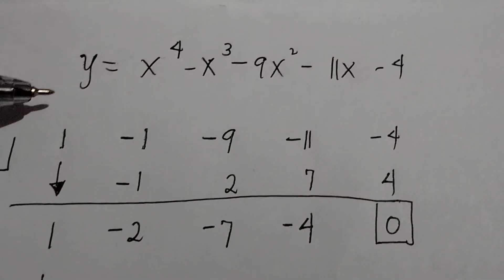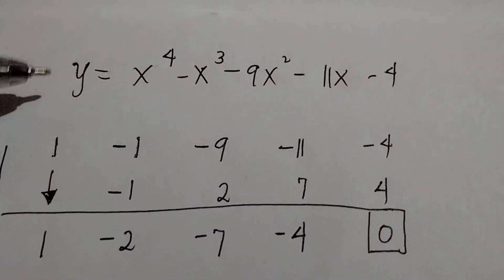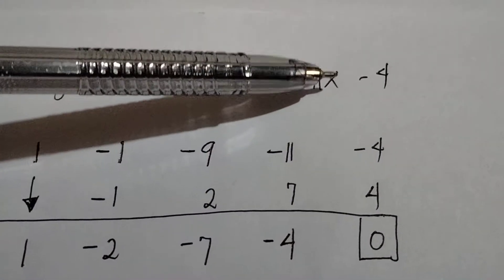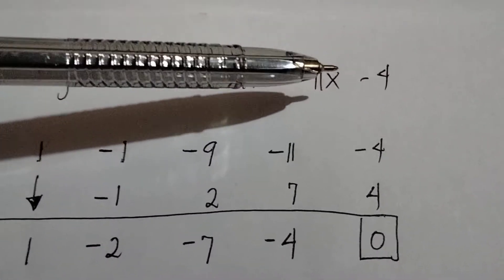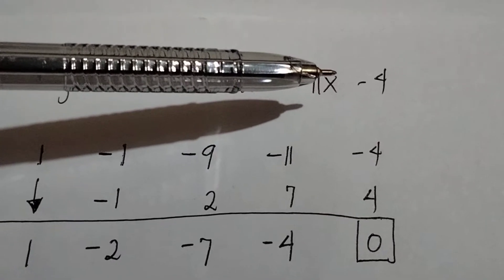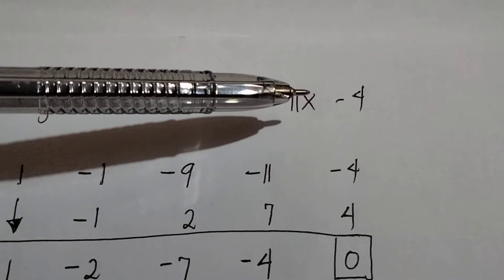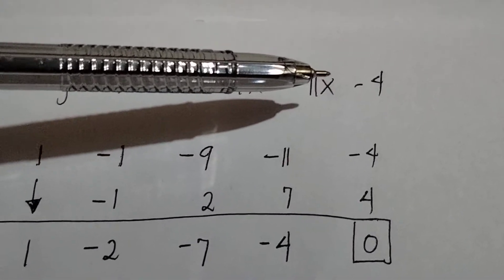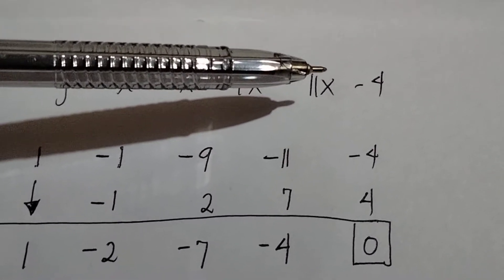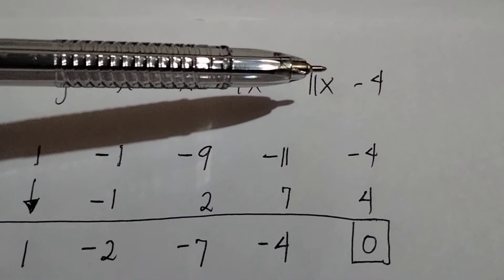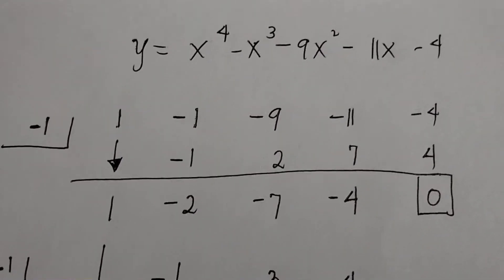Let's try applying the rational root theorem. The constant is negative 4, so the possible rational roots are positive or negative 1, positive or negative 2, and positive or negative 4. From that, we are going to choose one. If the remainder is 0, that means it is one of the rational roots. Let's take negative 1.